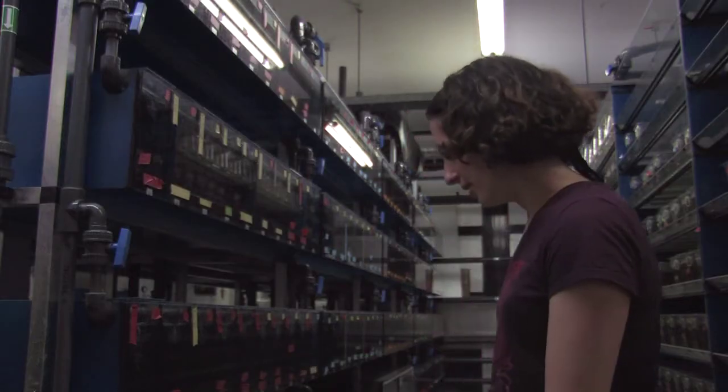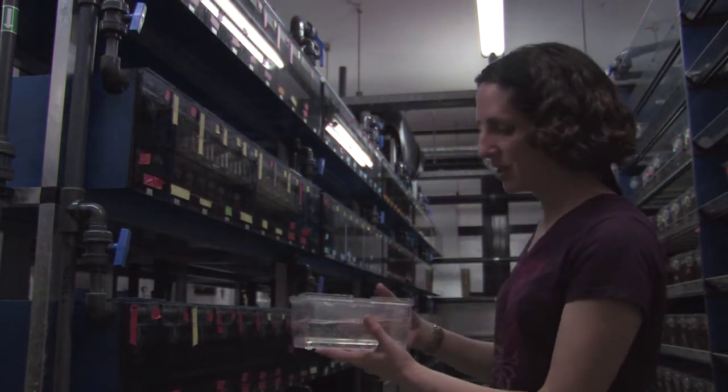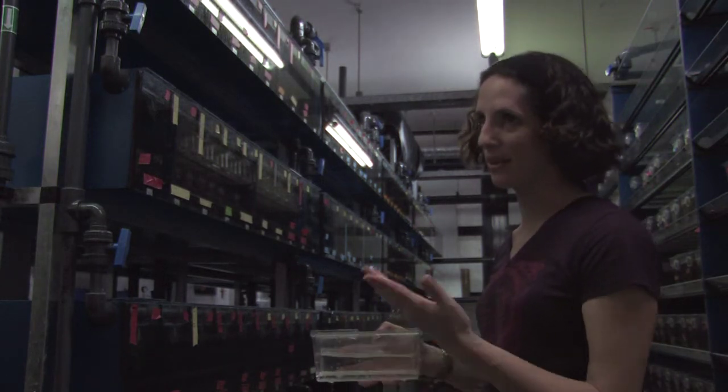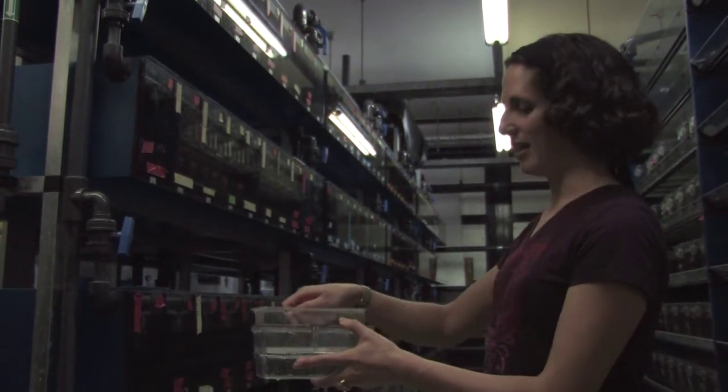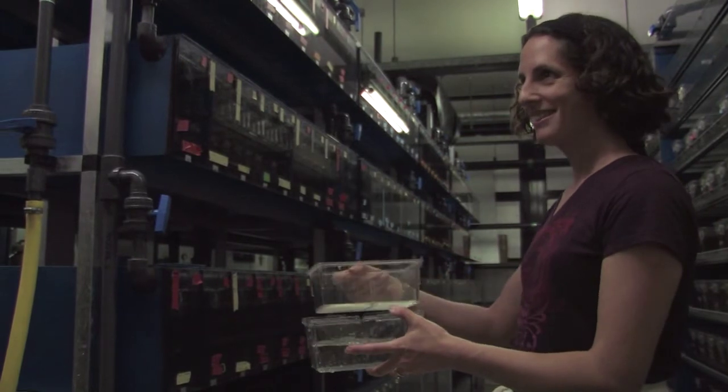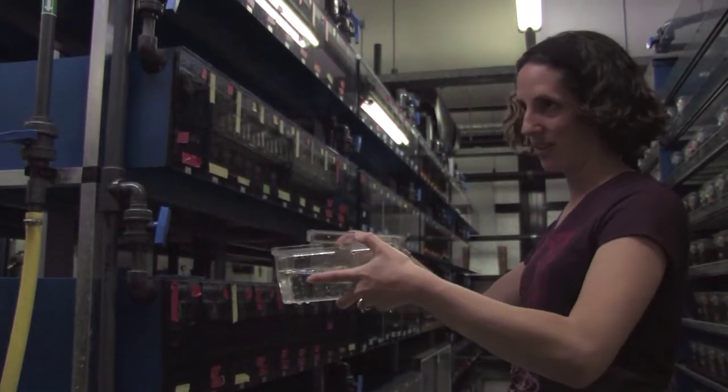They go in these tanks, and the fish will actually eat the eggs if they aren't collected because they want to get the protein back. In this tank, you lift this up and the eggs fall through. There's holes here. So the fish lay the eggs and they fall to the bottom, and then you take the fish out and you collect the eggs from here.